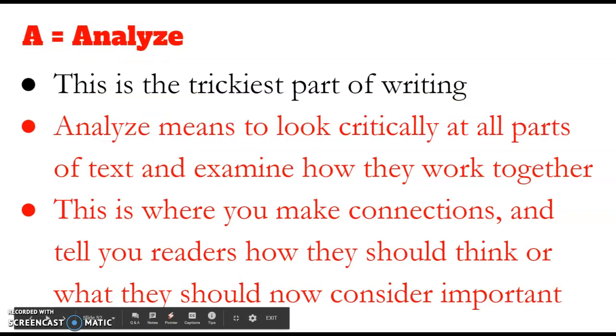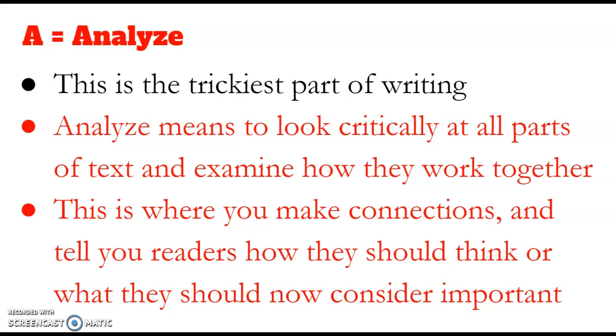Next, this is the trickiest part of your writing, and it's A for analyze. This is where you go below the surface. This is where you really use your brain, and you analyze. What analyze means is to look critically at all parts of the text and to examine how they work together. So now you're taking the quote that you just used, and you're trying to make deeper meaning out of it. You're trying to make a connection to other things that you've read. You're trying to help the reader of your written response make bigger connections to the world around them. This is where you make connections, and you tell your reader how they should think or what they should now consider to be important. This is very, very tricky, but with practice, you'll really be able to do this well.